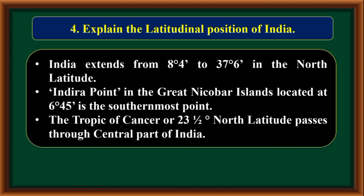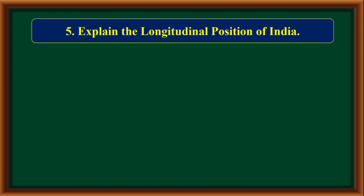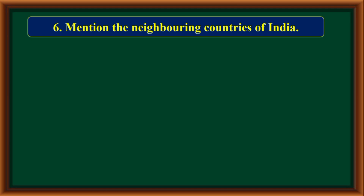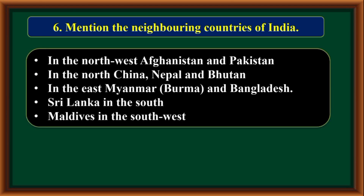Explain the longitudinal position of India. India extends from 68 degrees 7 minutes east to 97 degrees 25 minutes east longitude. Indian Standard Time is based on 82 and a half degrees east longitude passing through Allahabad. Indian time is ahead of Greenwich Mean Time by about 5 hours and 30 minutes.